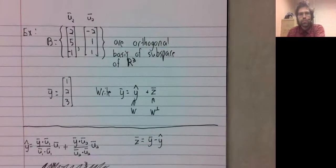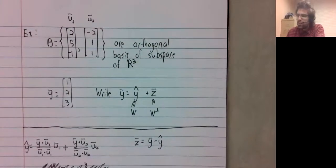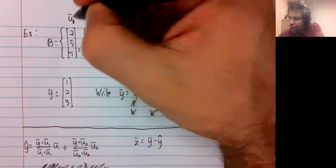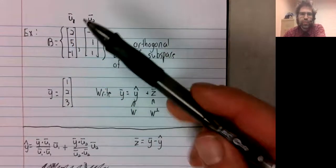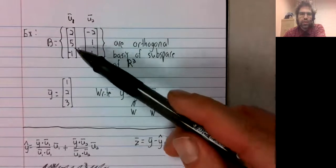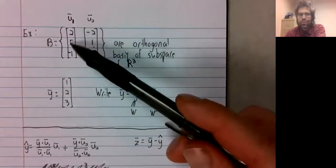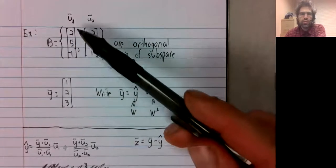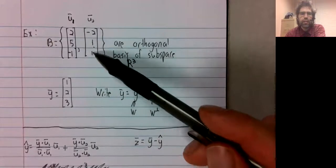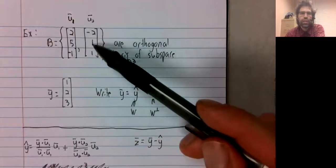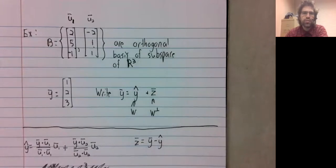In this video, we'll do an example of an orthogonal projection. So we have a subspace of R3, the space spanned by these two vectors. This is an orthogonal basis: negative four, negative one, positive five. The dot product is zero.